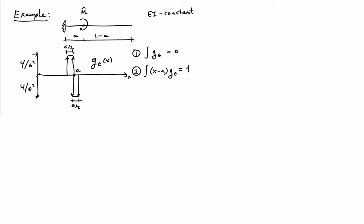Notice that the integral of g epsilon is equal to 0, so that's net zero force. And the moment about the point A, x minus a times g epsilon integrated, gives me 1. So, no net force, unit moment. And to define a point moment, I'm going to consider taking the limit as epsilon goes to 0 of g epsilon, I'm going to call it del prime, and that's going to be how I represent point moments.